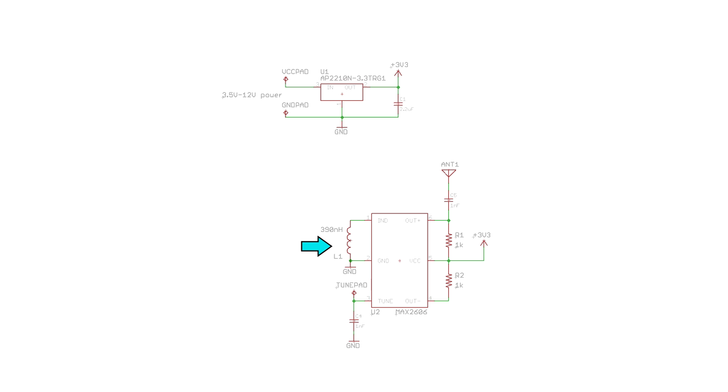This inductor sets the approximate frequency range that the MAX2606 will oscillate at. If you read the datasheet, you'll see that this chip can oscillate from 70 to 150MHz, and we just want it to put out roughly 100MHz for the FM band. 390nH takes care of that.